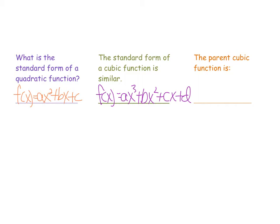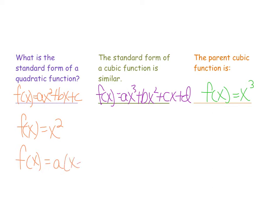Now the parent cubic function is f(x) = x³. This is very similar to the parent quadratic function, which is f(x) = x². Now the quadratic function has another form called the vertex form, and that looks like this: f(x) = a(x − h)² + k.